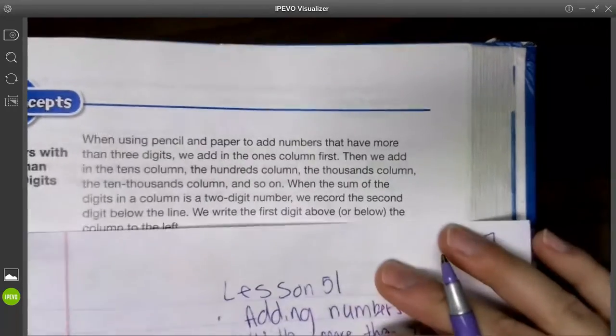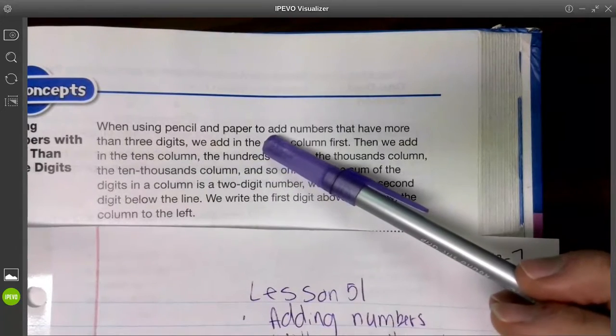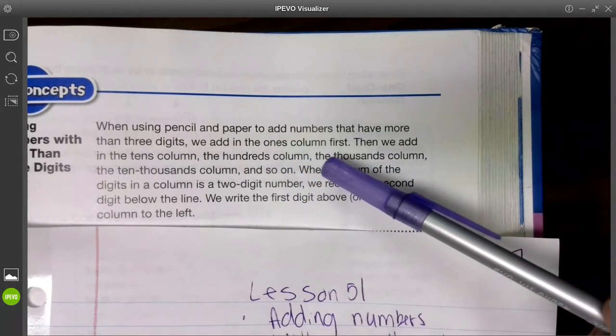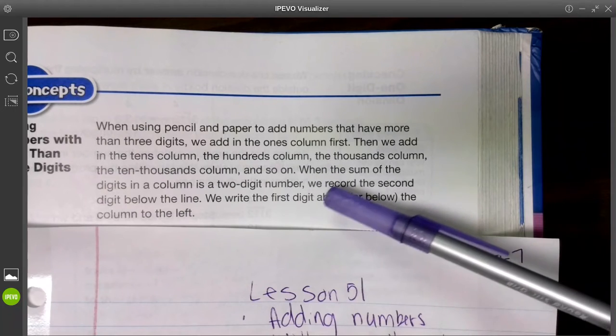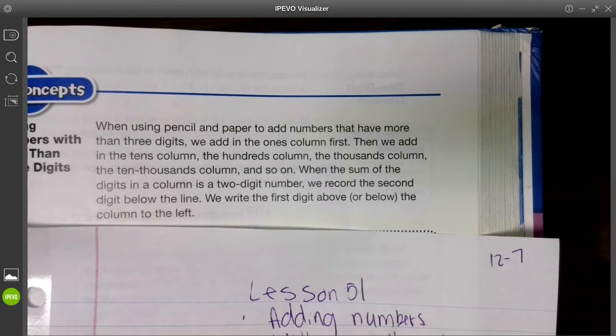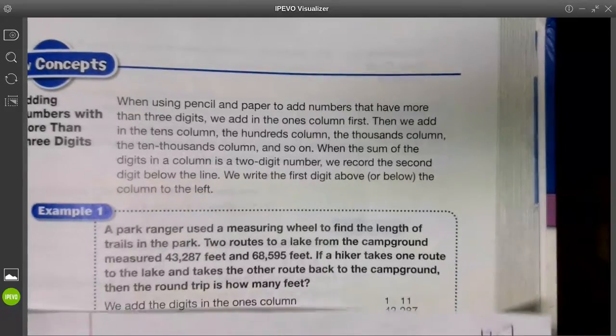All right, we're going to go ahead over here. You're on page 326, 327 is where we're starting in math today. When we use pencil and paper to add numbers with more than three digits, we add the ones, the tens, the hundreds, then thousands, ten thousands, and so forth. When the sum of the digits in a column is a two-digit number, we take the second number, the number in the tens place, and move it on top of the numbers next to that.